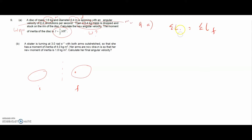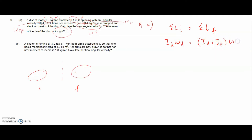L_initial equals L_final. Initially we only have the disc, so L = I·omega. For the final state, we have the disc's moment of inertia plus the moment of inertia of the dropped mass, all multiplied by omega_new — the new angular velocity we want to find.